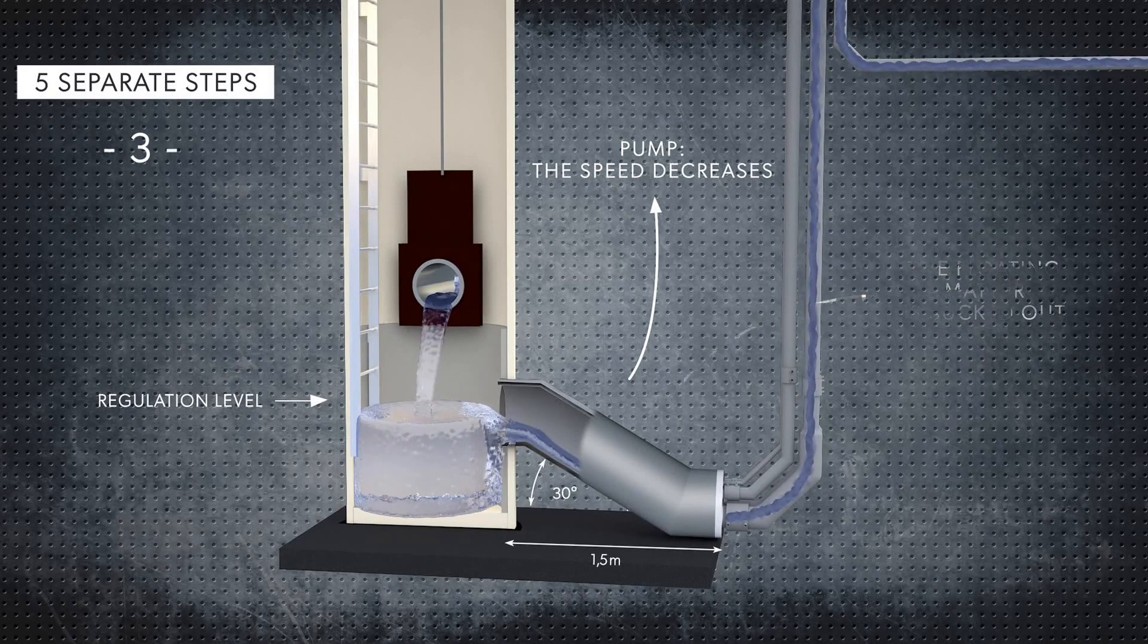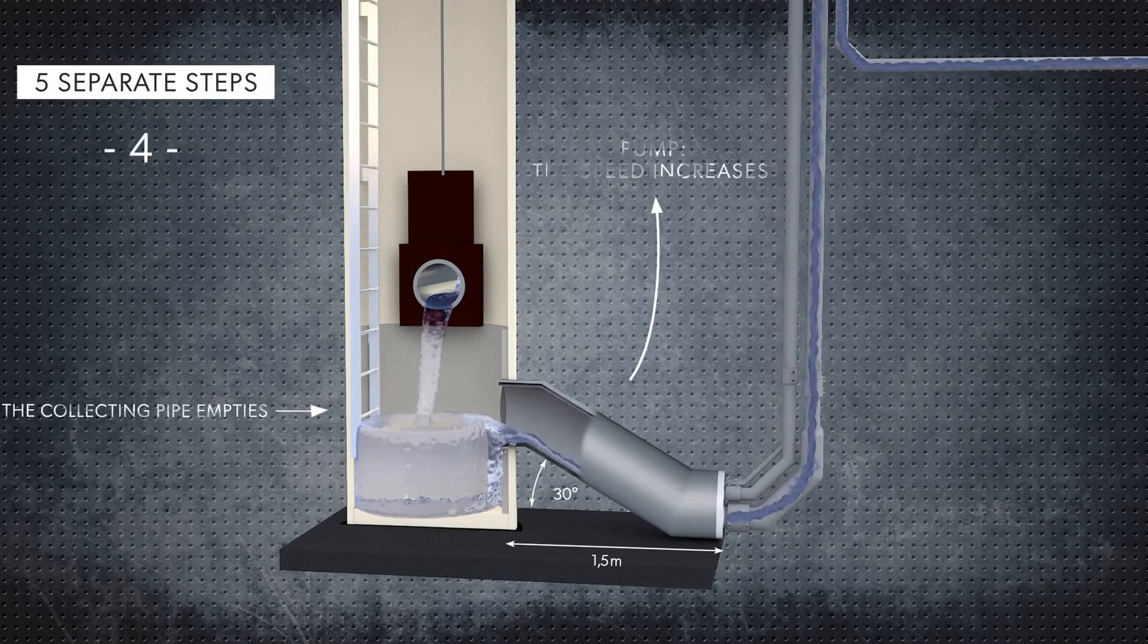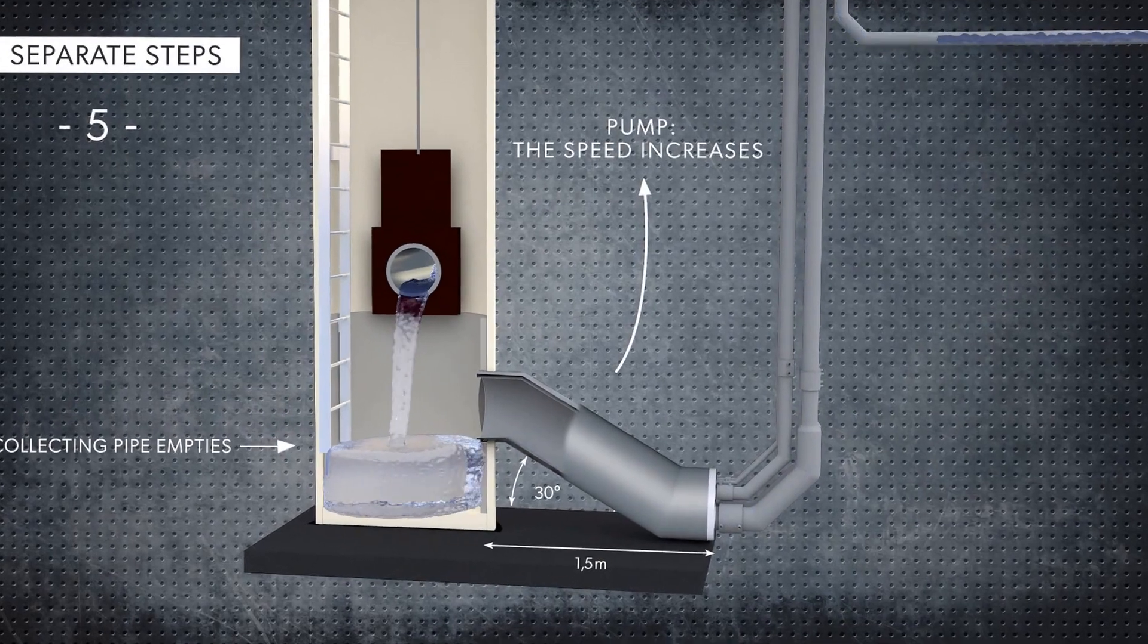As the surface underwater is smaller, the flow rate increases producing a drainage effect. The speed increases again and the inclined collecting pipe empties, and so on.